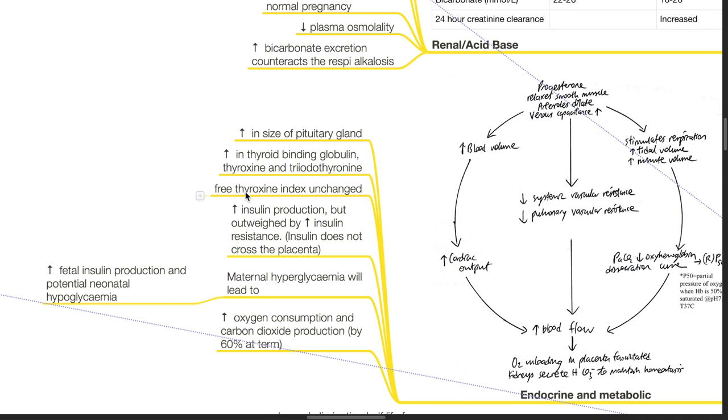Free thyroxine index is unchanged. Insulin production increases but is outweighed by increased insulin resistance. Insulin does not cross the placenta. Maternal hyperglycemia leads to increased fetal insulin production and potential neonatal hypoglycemia. Oxygen consumption and carbon dioxide production increase by 60% at term.